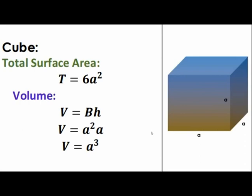The volume of a cube is the area of the base, denoted with B, times the height H. But since the area of the base is A squared and the height is A, then the volume is A squared times A, which is equal to A cubed.